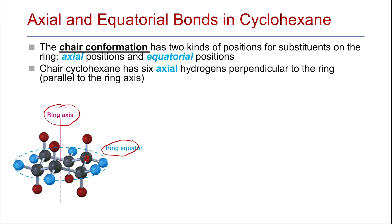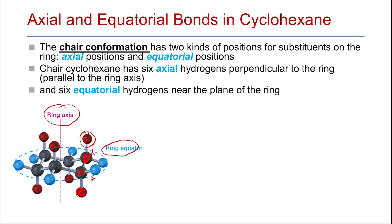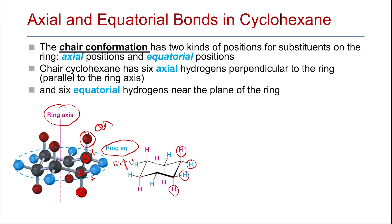The axial hydrogens alternate. On carbon number one, there is one hydrogen atom above the ring equator, parallel to the ring axis. On carbon number two, the axial hydrogen points downward — also perpendicular to the ring equator but pointing downward, parallel to the ring axis. The other hydrogens are in the equatorial position, so each carbon atom will have one axial and one equatorial hydrogen atom. As we can see, all six carbon atoms each have one axial and one equatorial hydrogen.